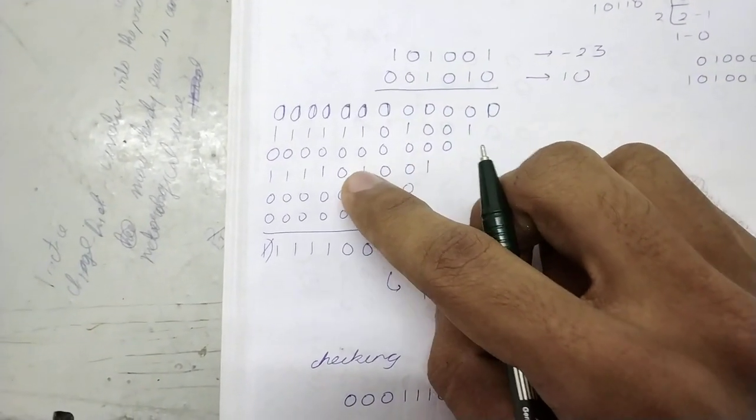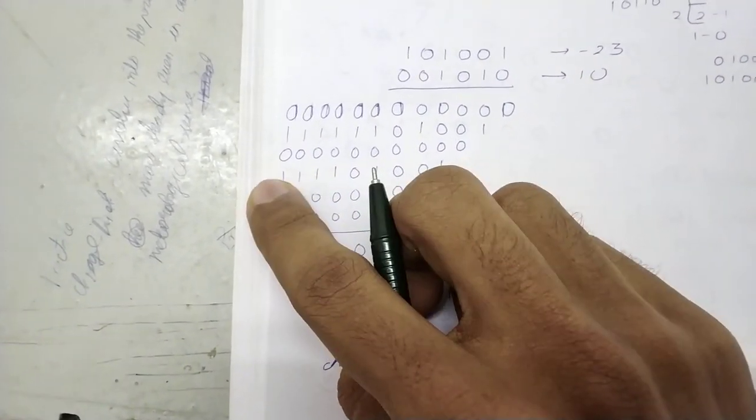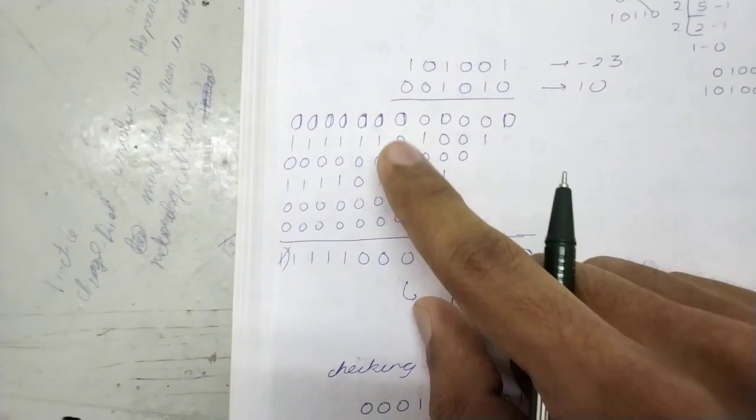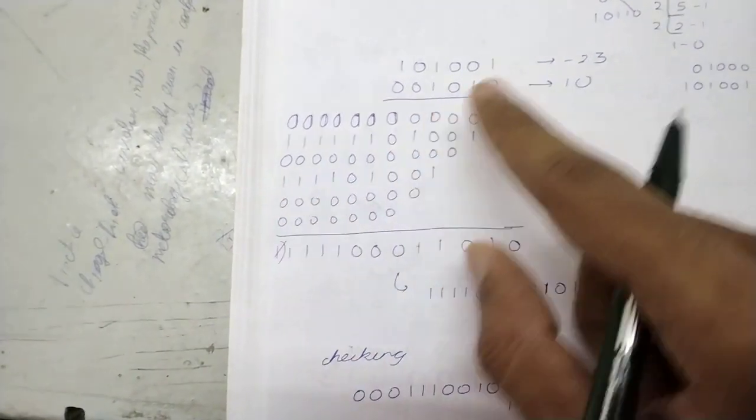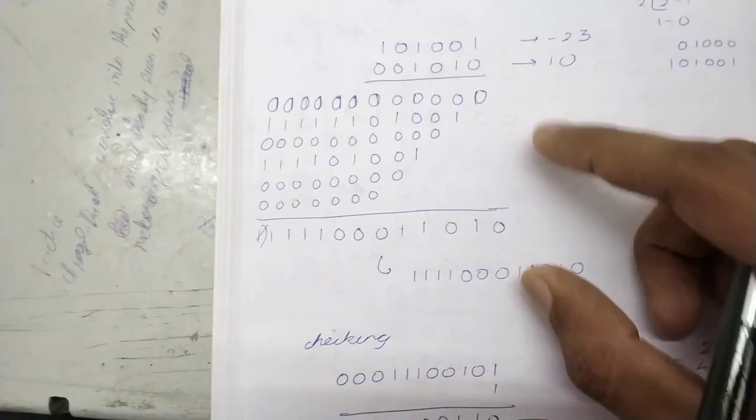0 into this, we will again put 0's here. 1 into this: 1, 0, 0, 1, 0, 1. Pad with 1's, not 0's. Then 0's, then again 0. Then we will add.